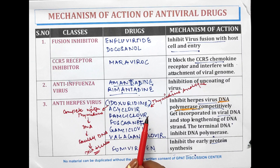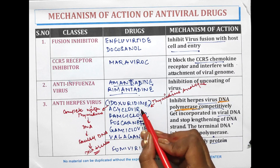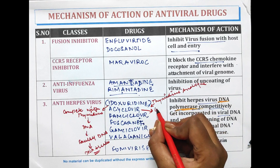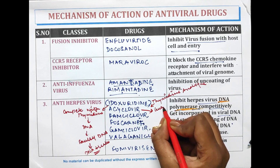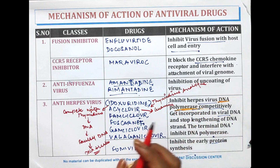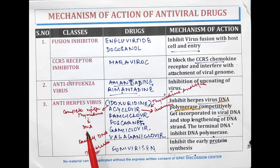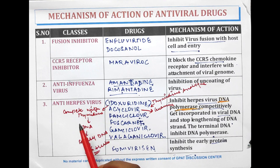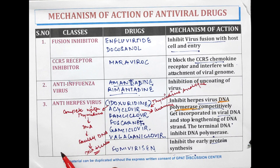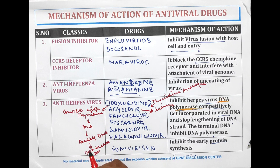Acyclovir is a deoxyguanosine analogue — a guanine analogue. Similar to idoxuridine, it is converted into acyclovir monophosphate and then acyclovir triphosphate, and inhibits the herpes virus by getting incorporated into the DNA in place of guanine.